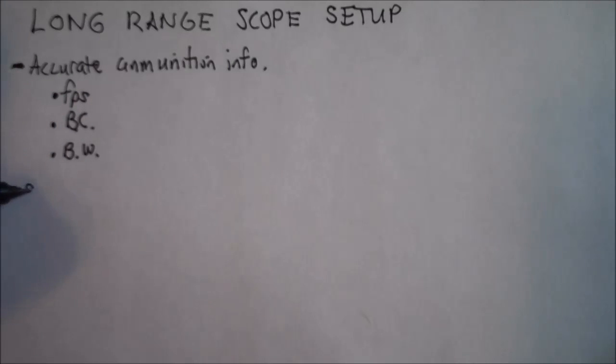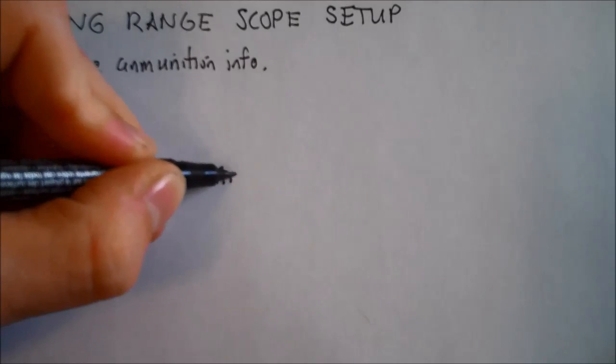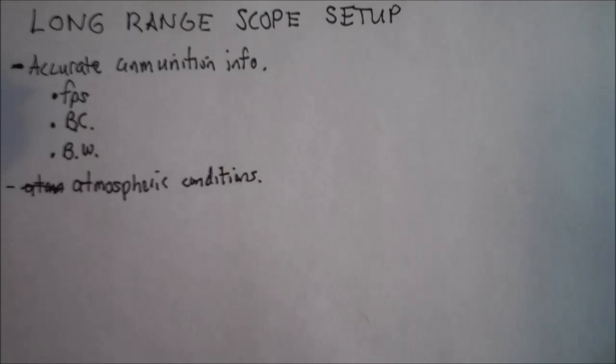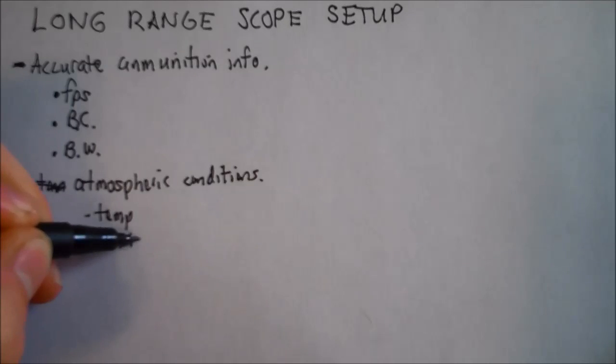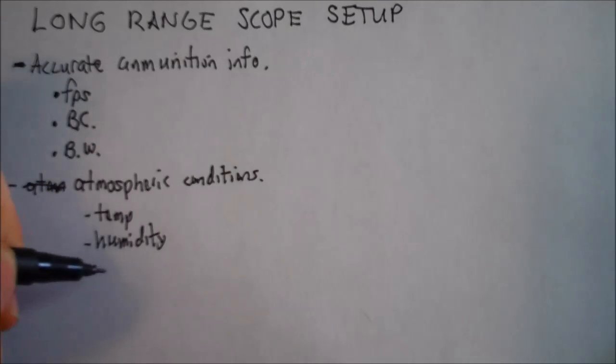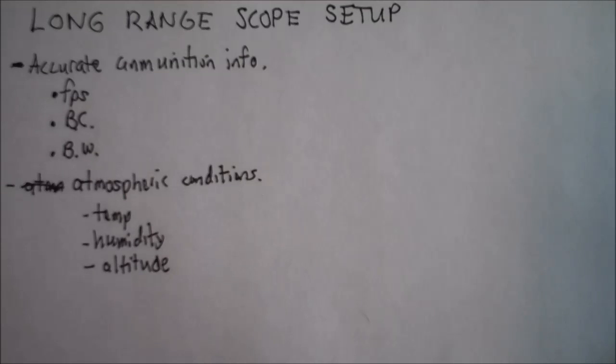So you're going to be mainly looking for atmospheric conditions. And you want to get these, they don't have to be right on, but you want to get them as close as you can to what you'll be shooting in. And that involves the temperature, the humidity, and sometimes the altitude at which you're shooting at. So these will all factor into the ballistics calculations that you'll enter in online.